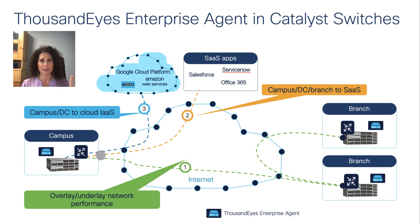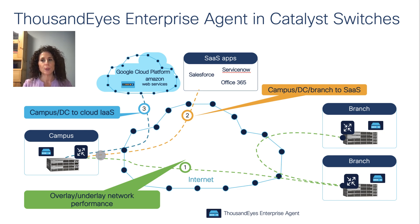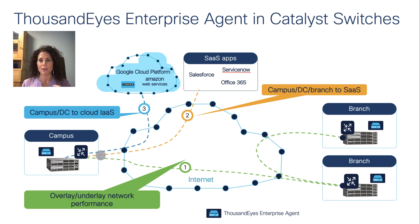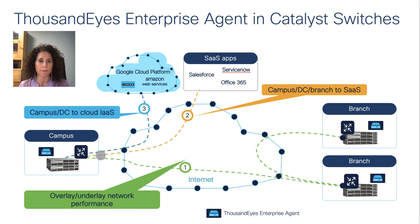One of those modes is within the already existing infrastructure — in this case the Catalyst 9K switches, including the 9300 and 9400. This has a lot of benefits: it allows us to reduce the footprint and reuse the existing infrastructure you already have in the campus and the branch. This allows you to benefit from getting data from the inside out — from inside the network to the outside world, from the campus and branch to the internet.